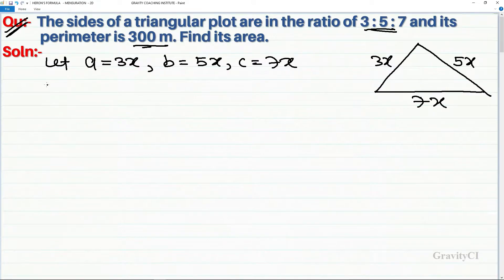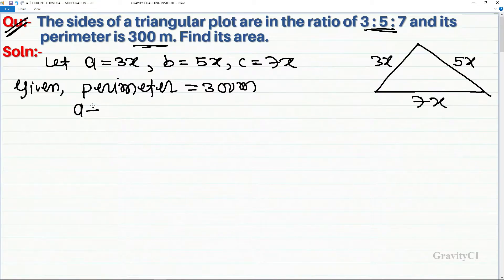The perimeter is given as 300 meters. Perimeter is the sum of sides, so a plus b plus c equals 300. Putting the values: 3x plus 5x plus 7x equals 300.